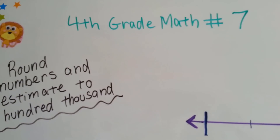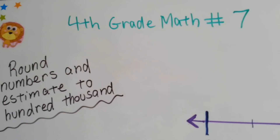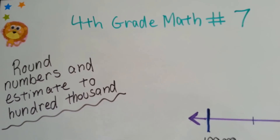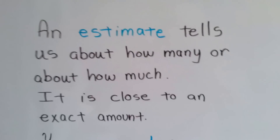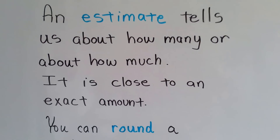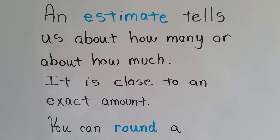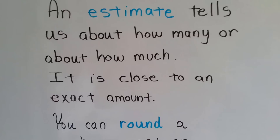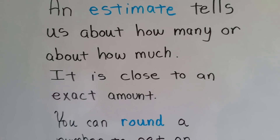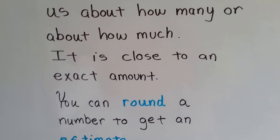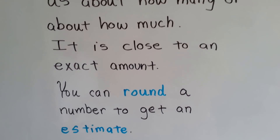Fourth grade math, number seven. Round numbers and estimate to 100,000. An estimate tells us how many or how much — about how much. It's close to an exact amount. You can round a number to get an estimate.